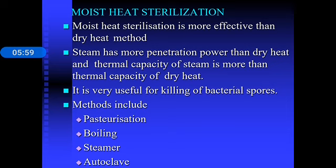Moist heat sterilization is more effective than dry heat sterilization. Steam has more penetration power and more thermal capacity than dry heat, and is very useful for killing bacterial spores. Methods include pasteurization (below 100°C), boiling (at 100°C), steamer (at 100°C at atmospheric pressure), and autoclave (above 100°C at higher pressures).